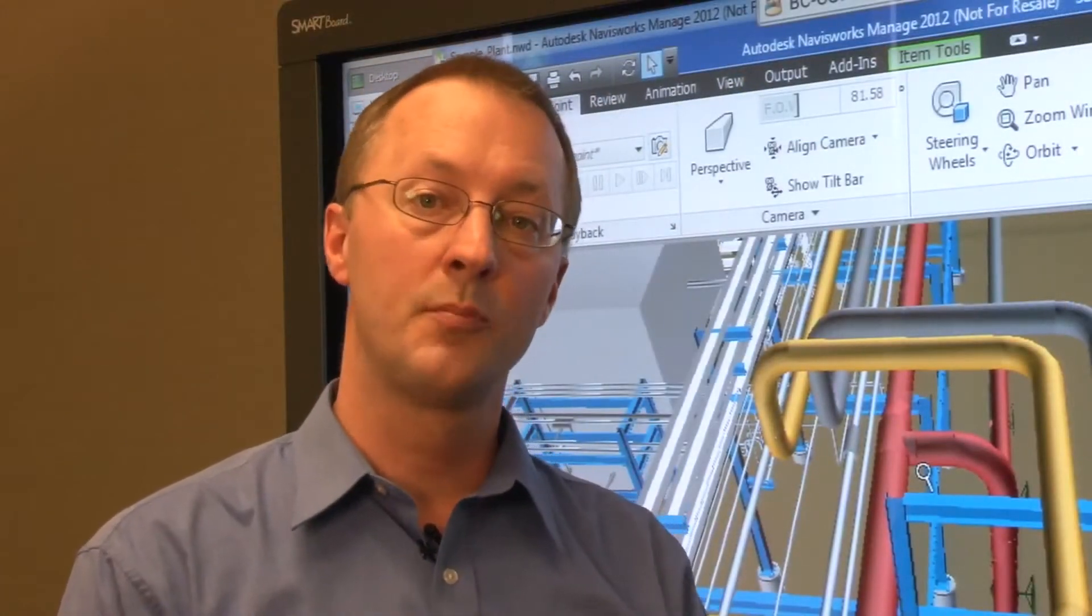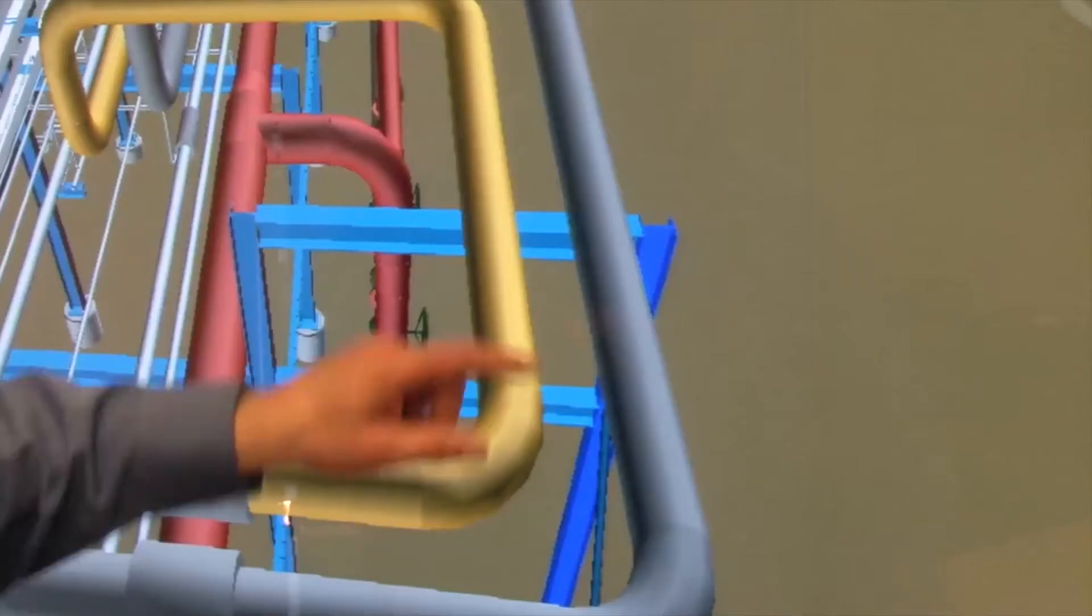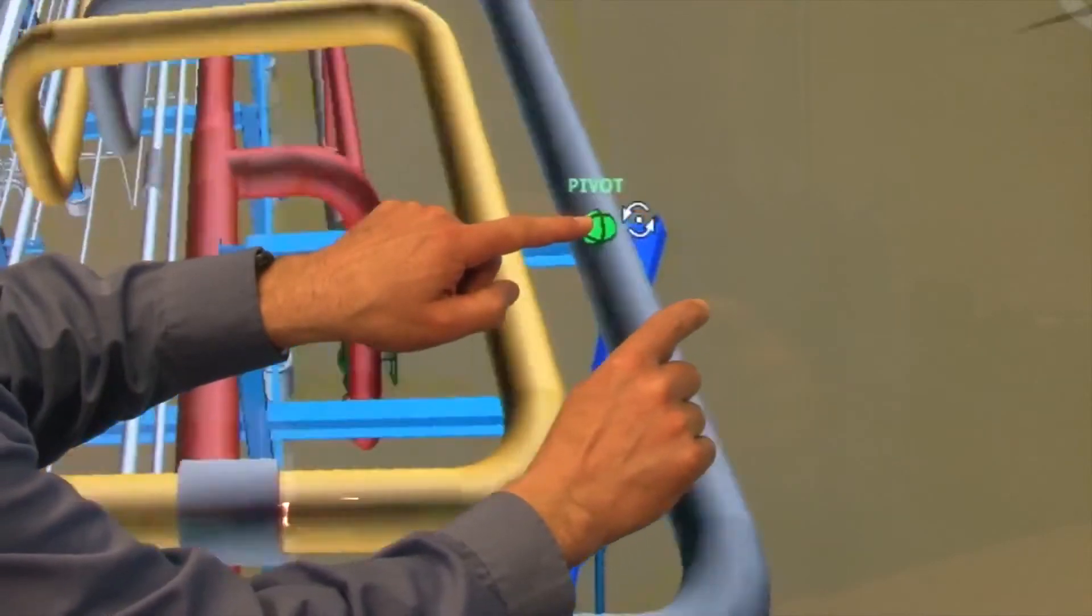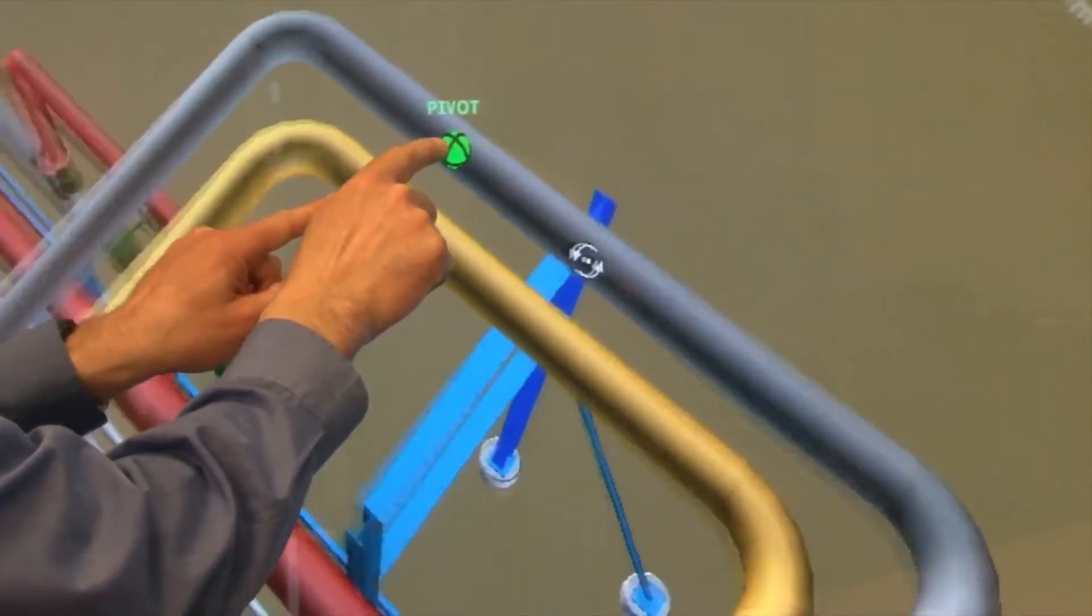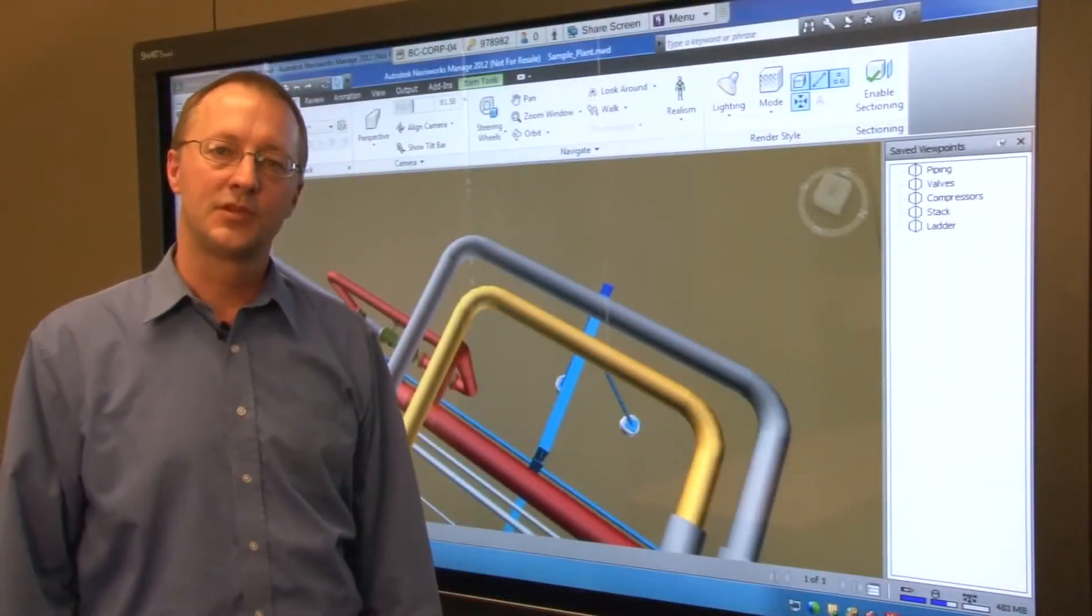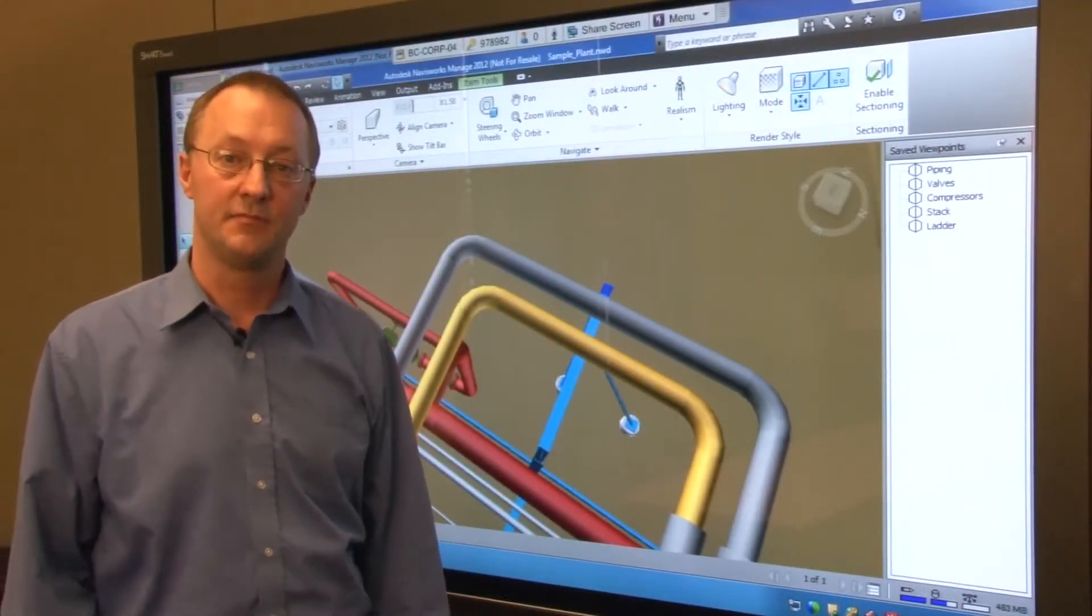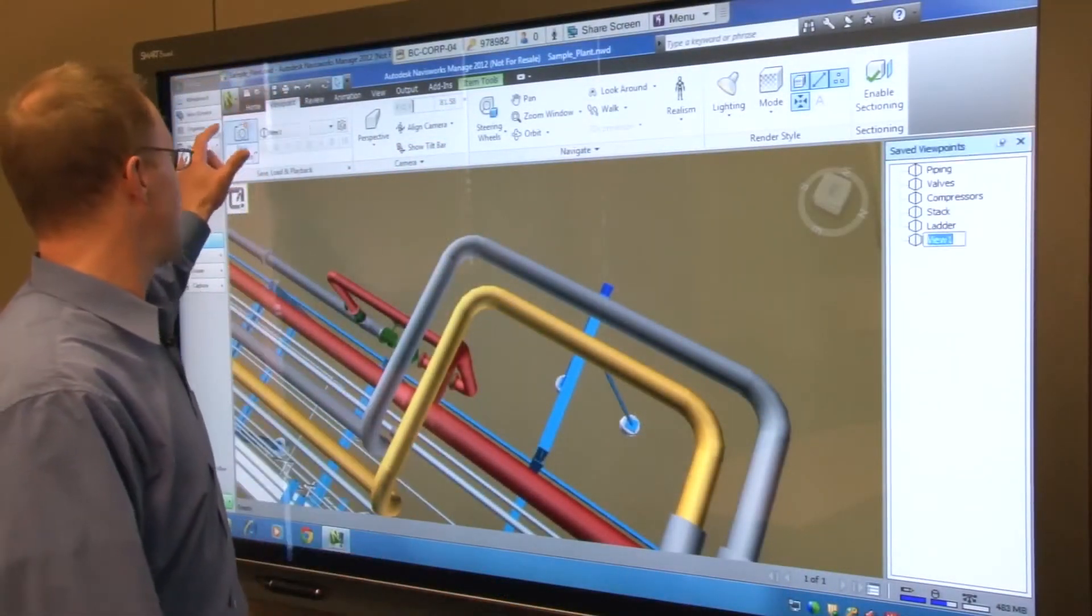You can also use a gesture to orbit the model around a pivot point. Your stationary finger sets the pivot point while your second finger guides the orbit. Once you have established the image that you want to review with the team simply save the viewpoint in Navisworks.